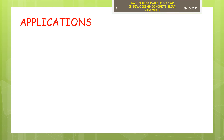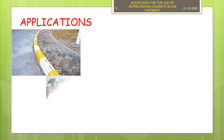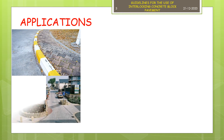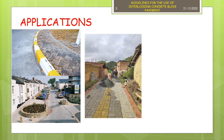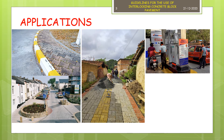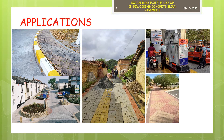Interlocking concrete block pavement have been found to have application in several situations such as footpaths and sidewalks, car parks, rural roads through villages, fuel stations, residential streets, and bus depots.